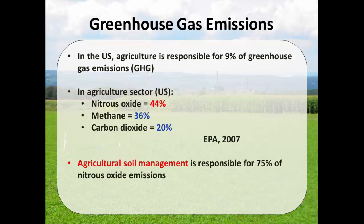In the U.S., agriculture is responsible for 9% of greenhouse gas emissions. Of that, 44% is from nitrous oxide emissions, followed by methane and carbon dioxide. Agricultural soil management is responsible for 75% of that 44%. So our main focus is nitrous oxide, but we're going to show data on methane and carbon dioxide.